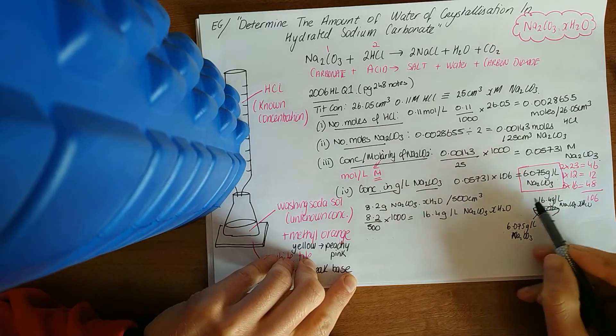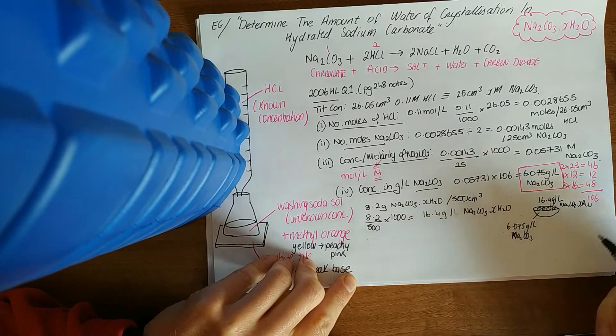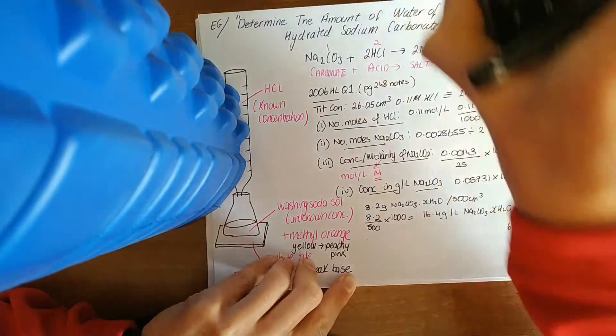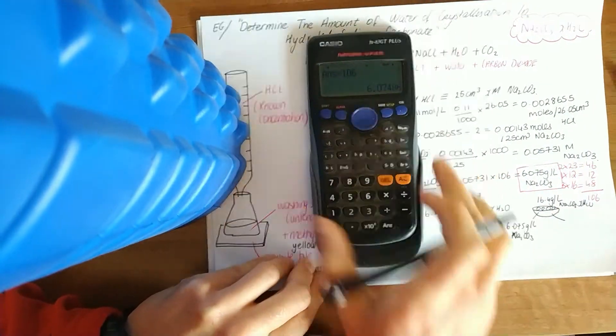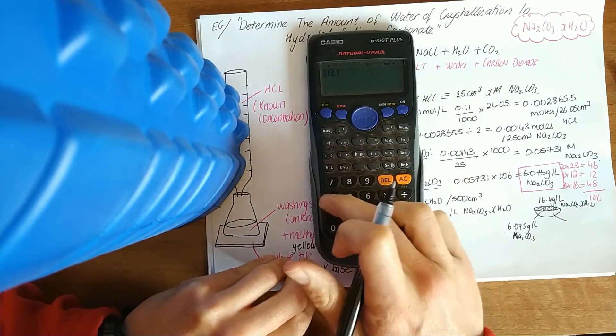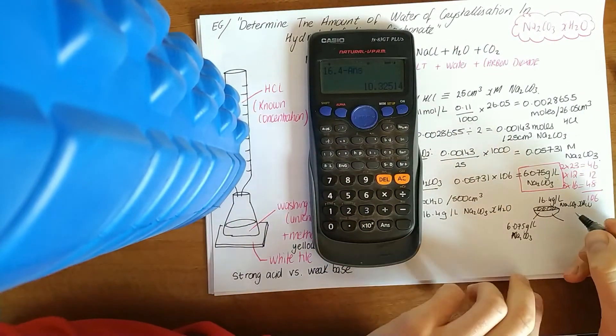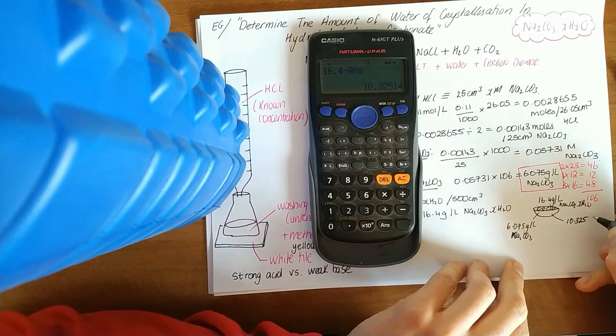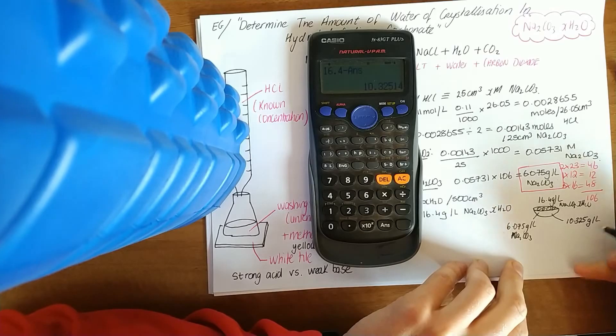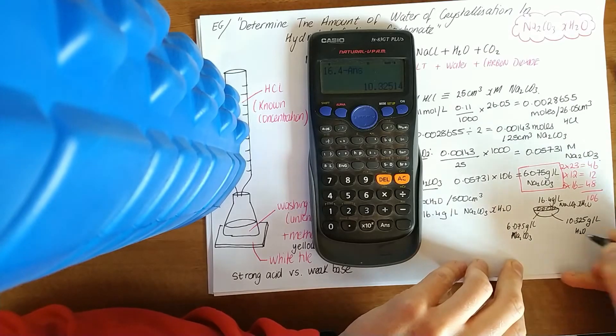How would you work out how much of them crystals is made up of water? You simply take them away. I still haven't deleted that number in my calculator, so I'll just go 16.4 minus the answer. 10.325 grams per litre of H2O.